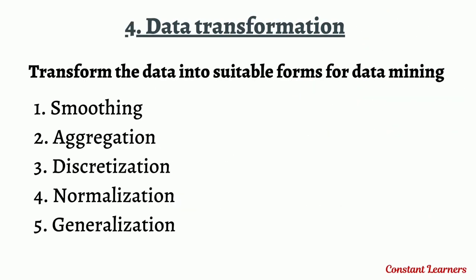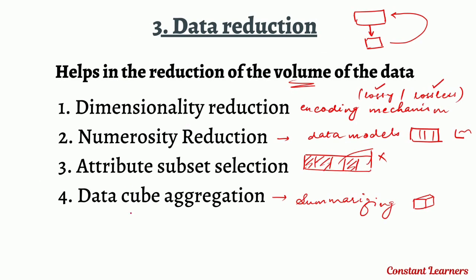The fourth step is data transformation — a process of transforming data into suitable formats for data mining. Raw data cannot be understood or interpreted by machines and needs to be transformed. This can be done in five ways. First is smoothing, where we remove any kind of noise using techniques similar to data cleaning, such as binning, clustering, and regression. Data aggregation, which is data cube aggregation — summarizing the data to form data cubes — is also a method.